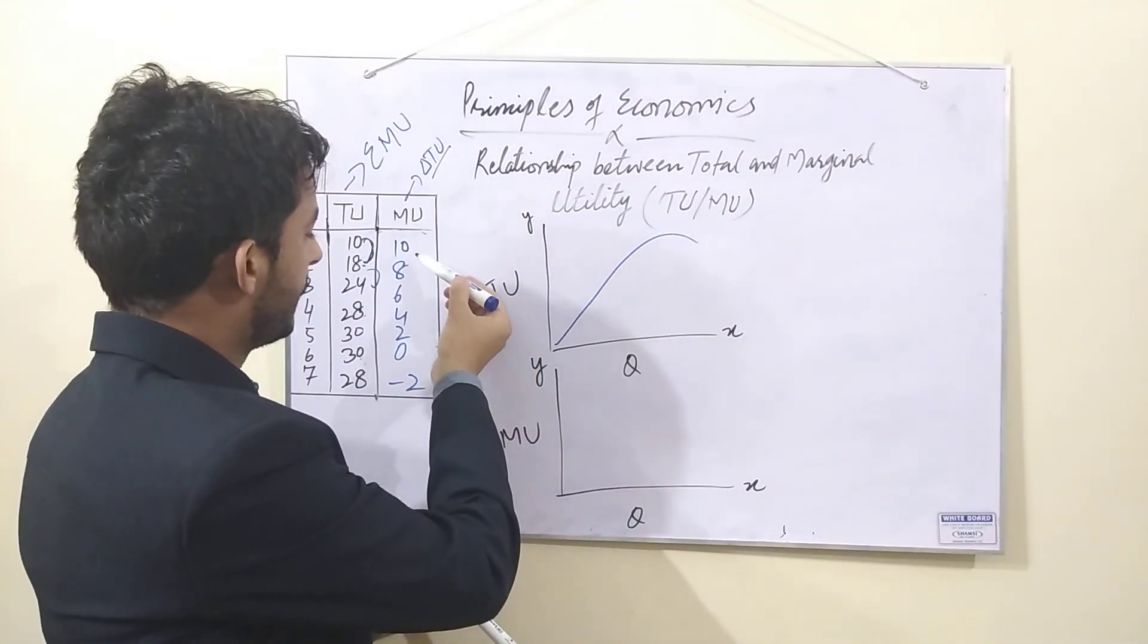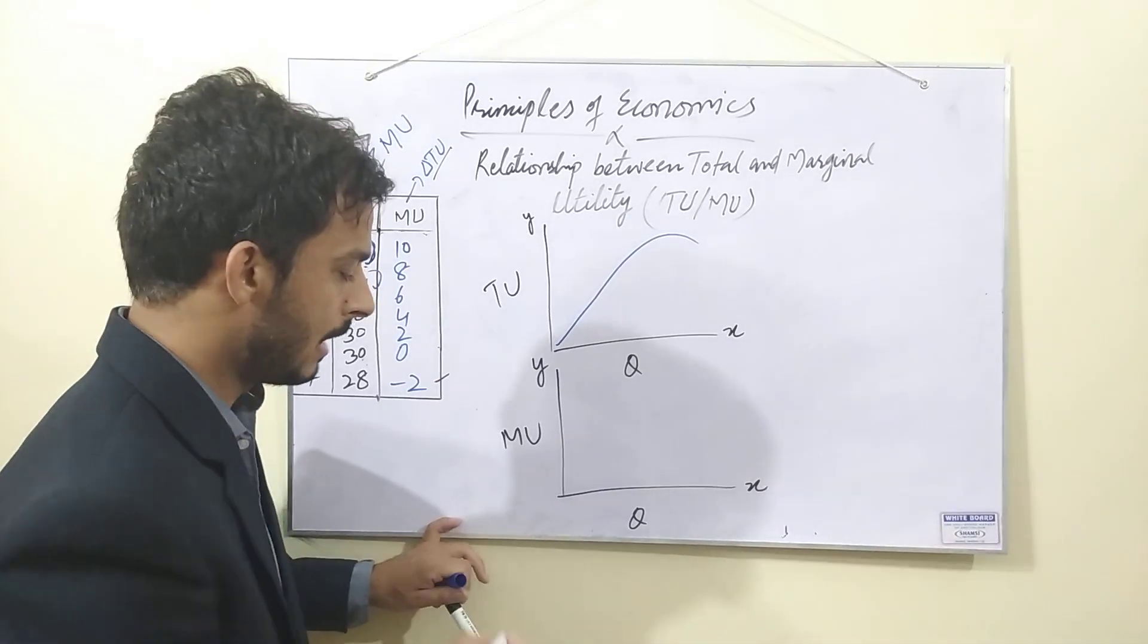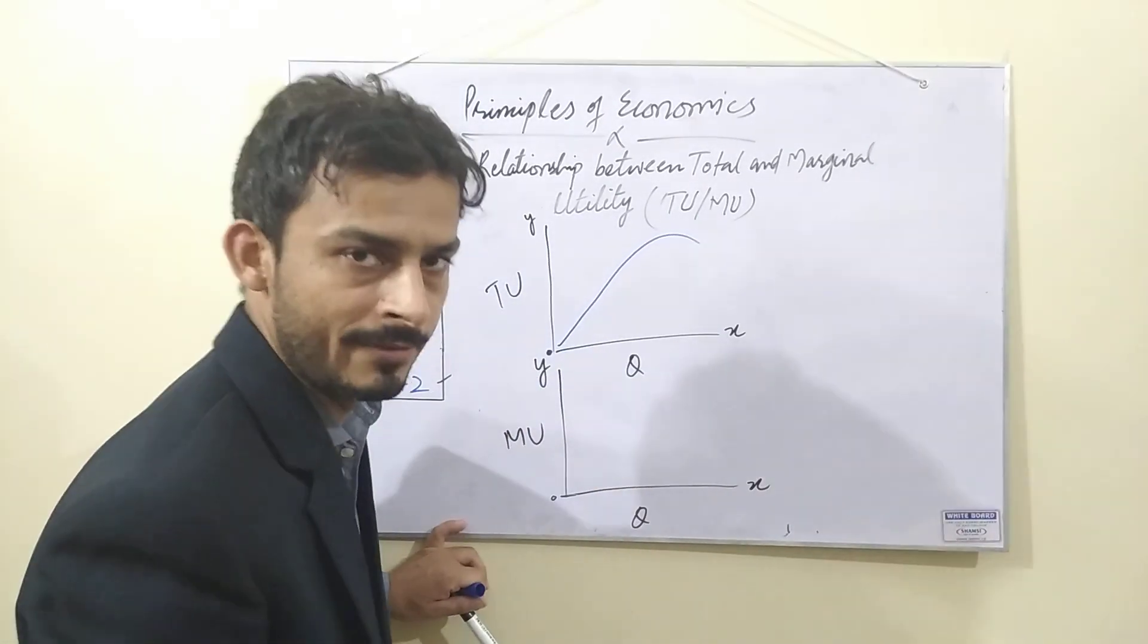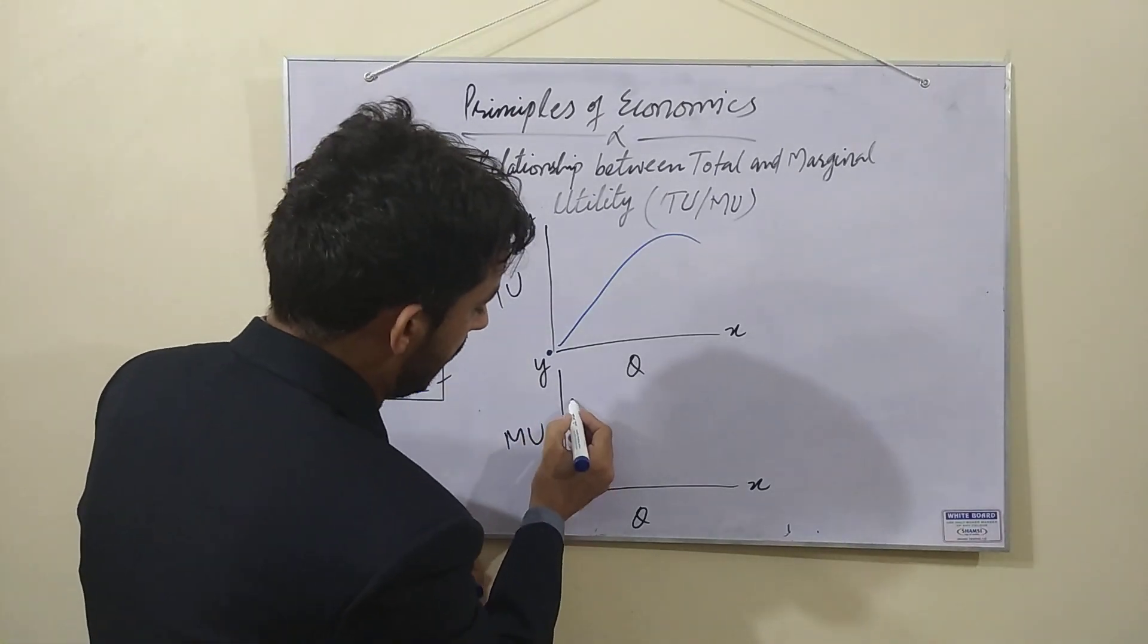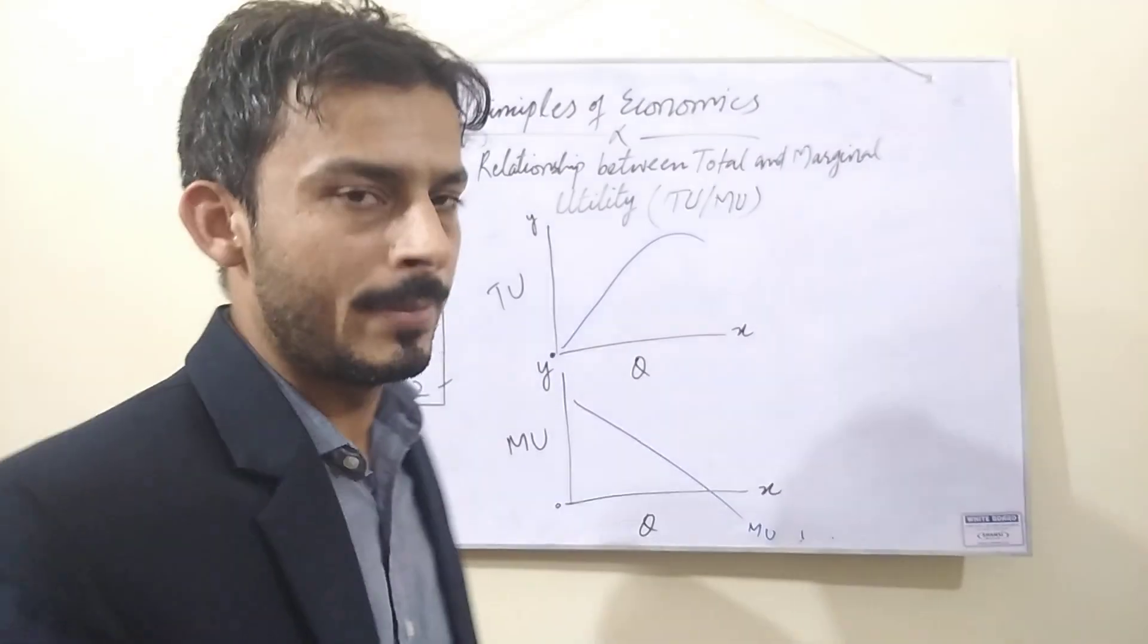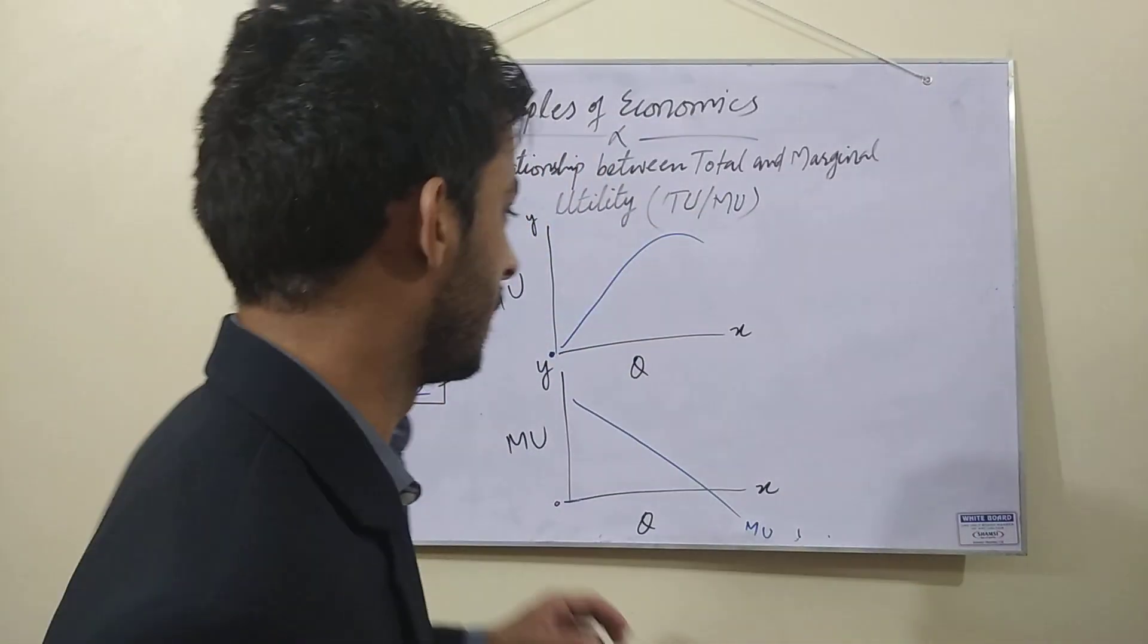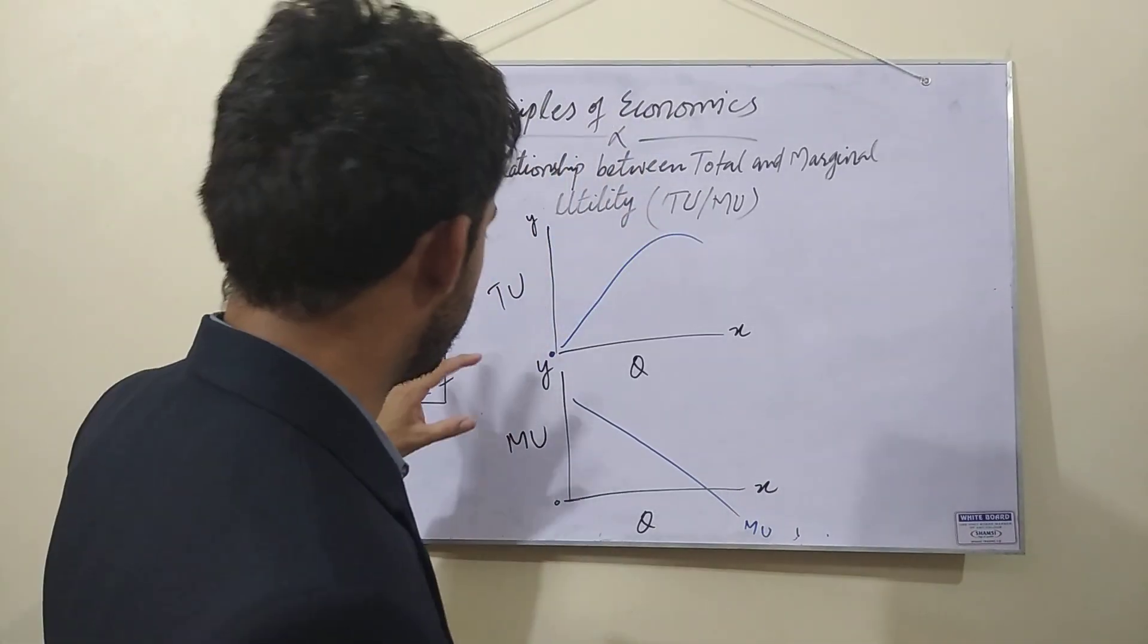Marginal utility keeps on decreasing. Point 0 minus. We know that this line is 0. X-axis marginal utility. If you plot it, then you plot it like marginal utility. If you plot it, it's quite easy. If you have a problem, tell me. I'll prepare a video for it again, but we'll talk about how to plot it. It's easy.